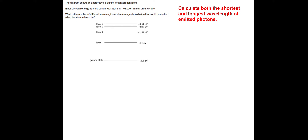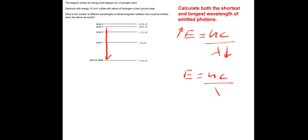Using the same diagram, calculate the shortest and longest wavelength of emitted photons that's possible. The equation linking energy and wavelength is E = hc/λ. The shortest wavelength would require the biggest possible energy change, and the longest wavelength would require the smallest energy change. So we need to calculate both — from level 3 to the ground state for shortest, and from level 3 to level 2 for longest.